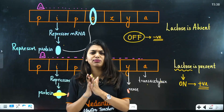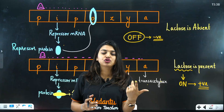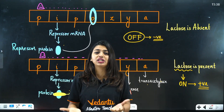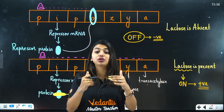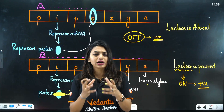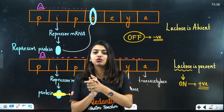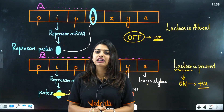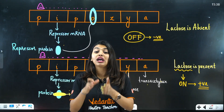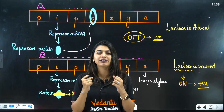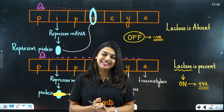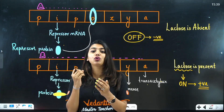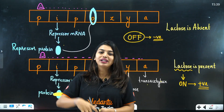Lac operon is a very simple concept. Remember who found it — Jacob and Monod; what happens when lactose is present versus absent; and when genes switch on or off. In eukaryotes the process is more complex because they are monocistronic, so for NEET you only need to study prokaryotes. I hope this video was helpful — go back and read your NCERT for a thorough understanding and to score full marks in your NEET examination. Let me know in the comments which topics you'd like covered in under 10 minutes!